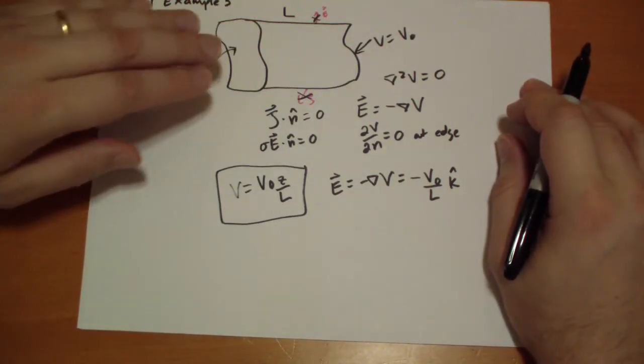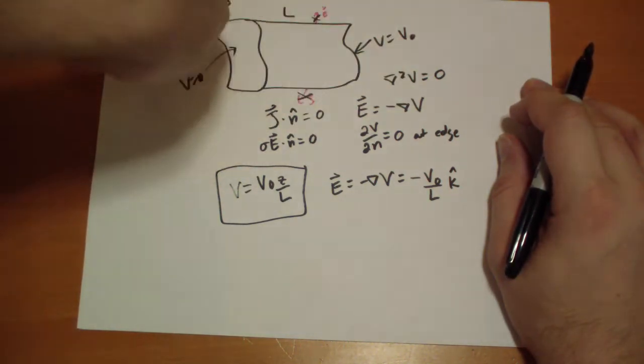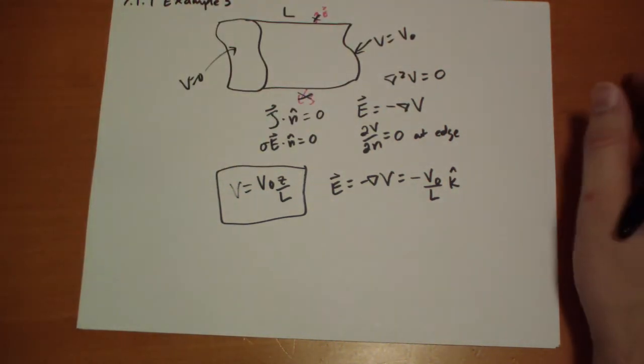So this says the electric field is pointing this way, in the k hat direction, or depending on whatever axis you set up.